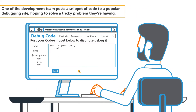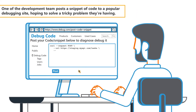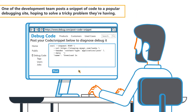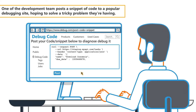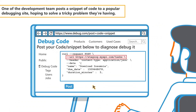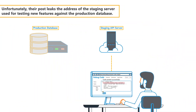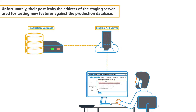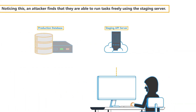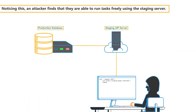One of the development team posts a snippet of code to a popular debugging site hoping to solve a tricky problem they're having. Unfortunately, their post leaks the address of the staging server used for testing new features against the production database. Noticing this, an attacker finds that they're able to run tasks freely using the staging server.